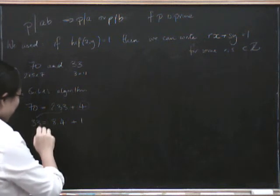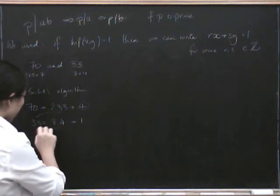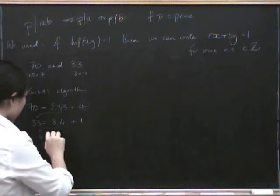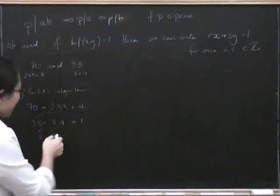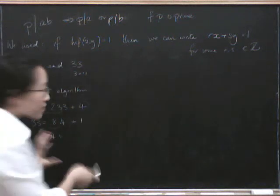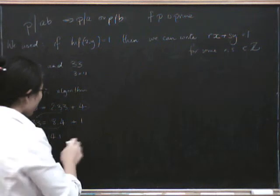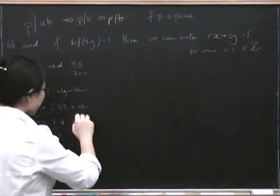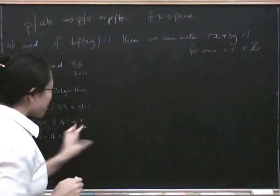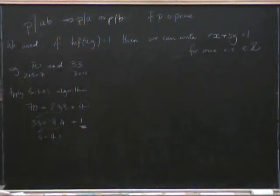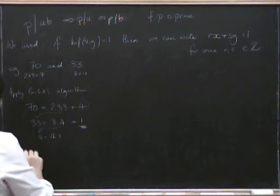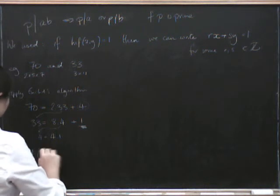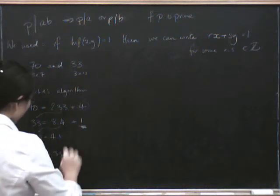And then we can, if we feel like it, write the last line in where we take the 4 over there, and we go 4 is 4 times 1, which is kind of obvious. But that's the thing that sort of finishes it off and tells us that the highest common factor of 70 and 33 really is this 1 that we see here. The last remainder that we get is the highest common factor. So the highest common factor of 70 and 33 is shown to be 1.